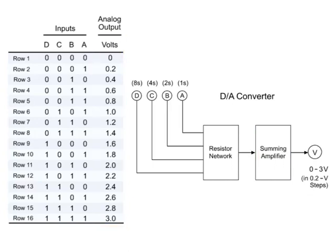With an input of 0, 0, 0, 0, according to the truth table, the voltage output would be 0. Inputting 0, 0, 0, 1 will result in an output of 0.2 volts.